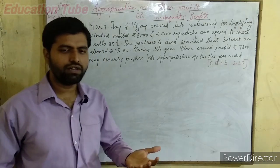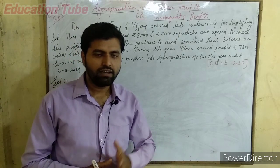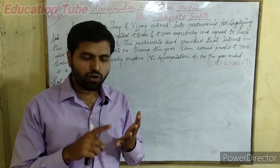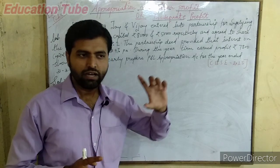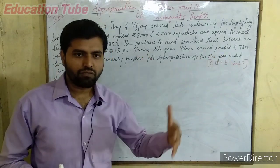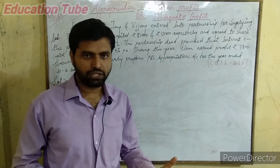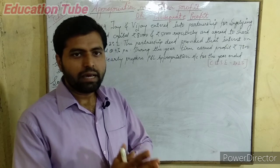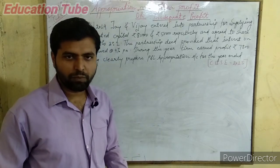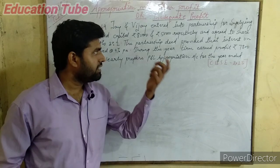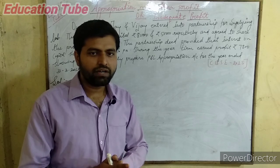Appropriation more than profit means the profit in a partnership firm flows through the trading account, profit and loss account, then the P&L Appropriation account, and then to partners' capital and balance sheet. Whatever profit is earned by the business — by the partnership firm — is transferred into the P&L Appropriation account, and in the Appropriation account that profit is distributed among the partners.